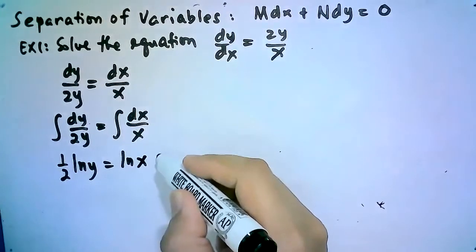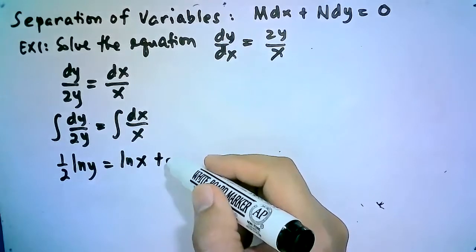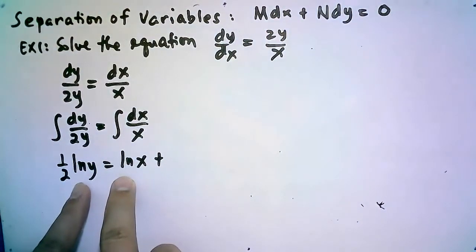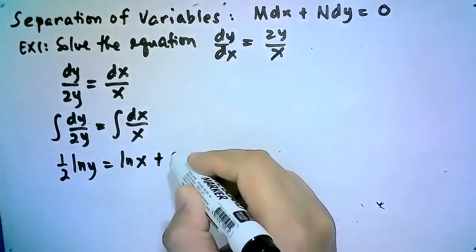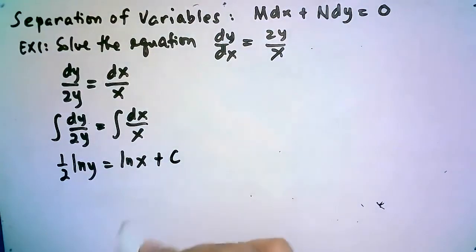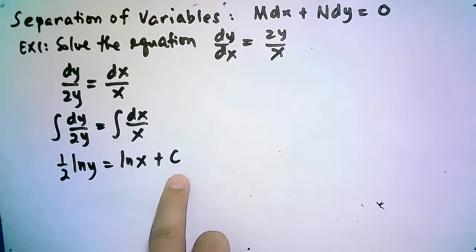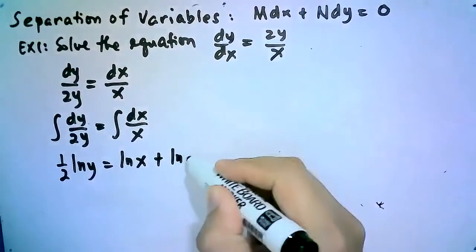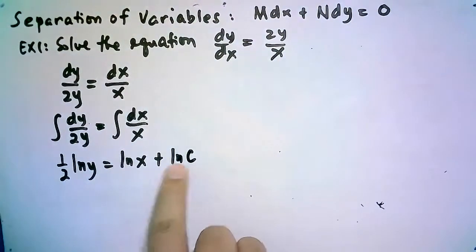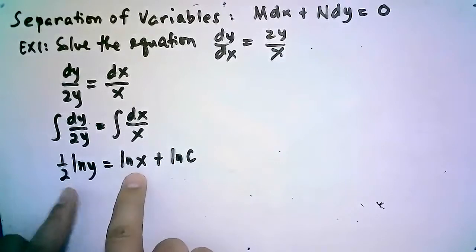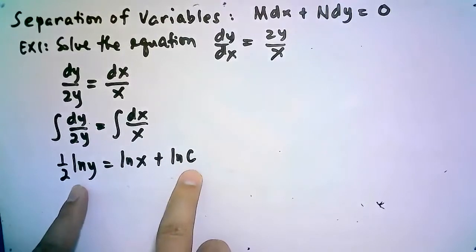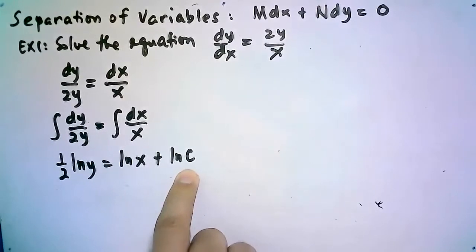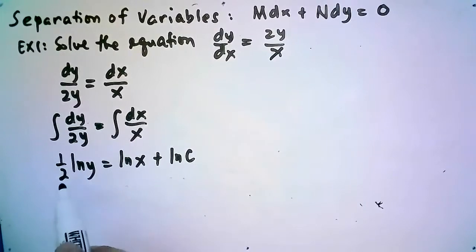We always add the constant plus c. Since we have ln terms on both sides, instead of writing c, we write ln c — note that c is a constant and ln c is also a constant. The reason we write ln c is because we have ln for y and ln for x, so we use ln c to match. Since we have a fraction, we multiply the whole equation by two to avoid fractions.